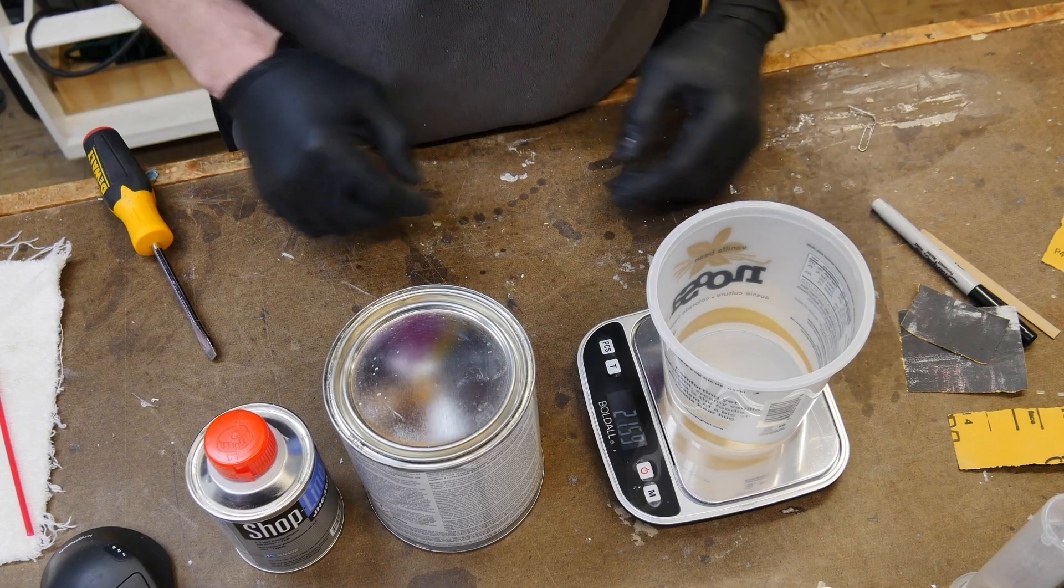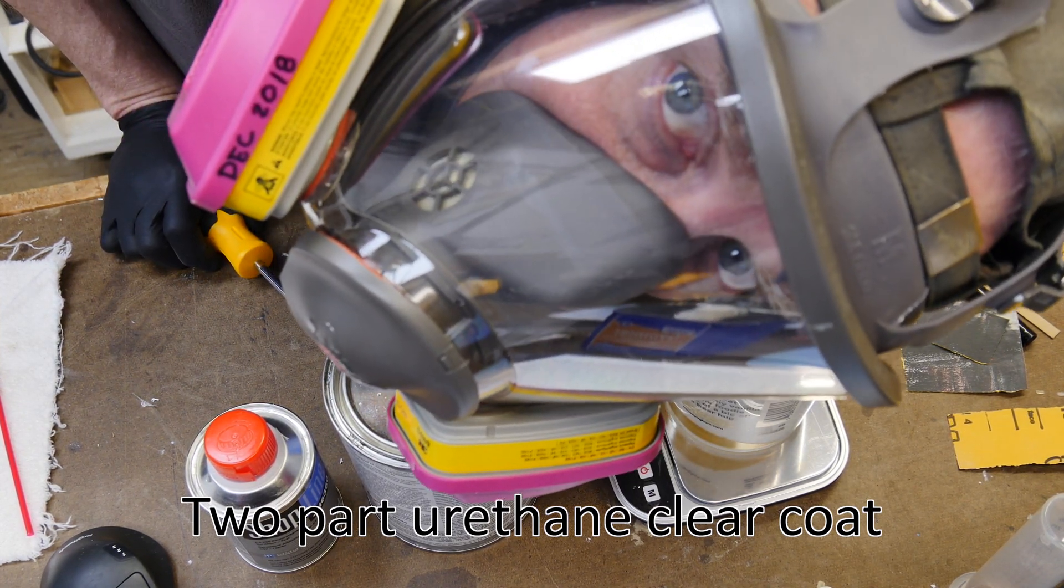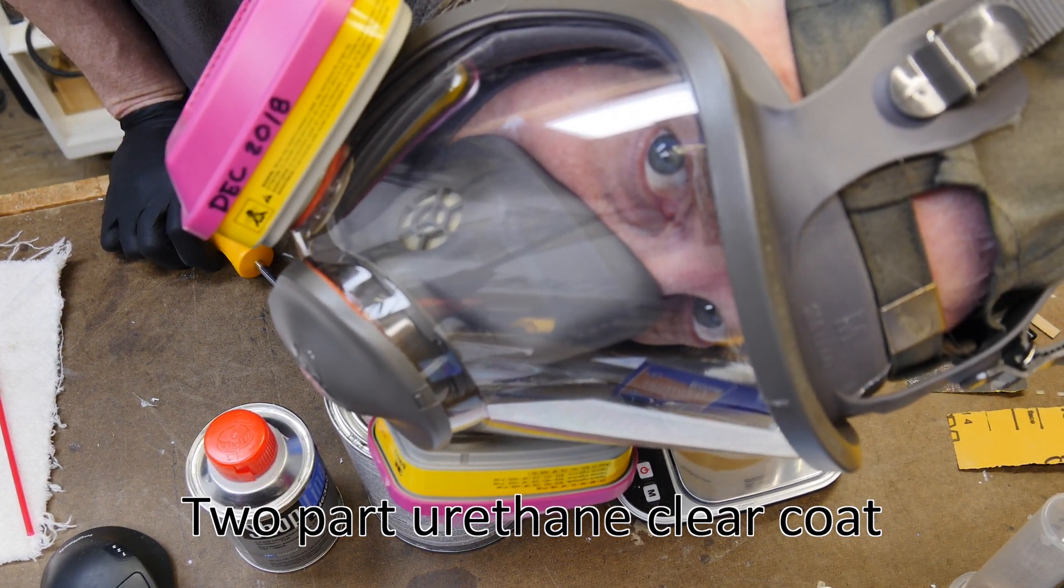So this is what the part looks like: 400 grit wet sanded on the outside and cleaned up on the inside.